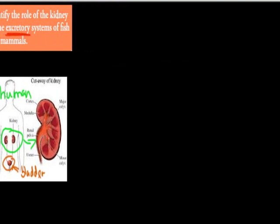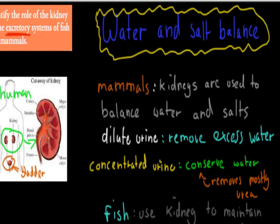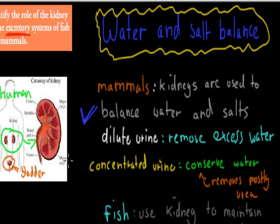The second part is water and salt balance. For mammals, kidneys are used to balance water and salt — so there's a tick for this. Mammals do use their kidneys to remove salt and water if they have too much. And if you have dilute urine, that removes excess water.